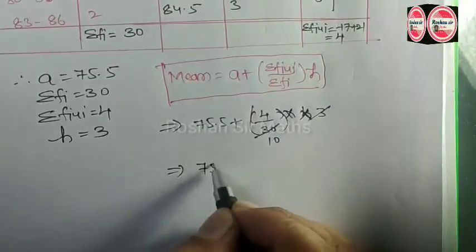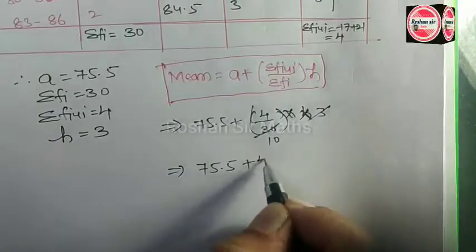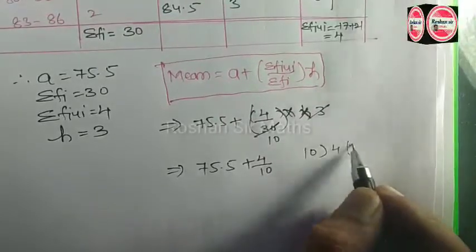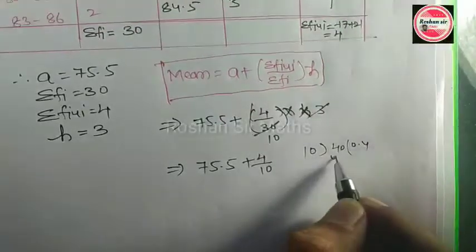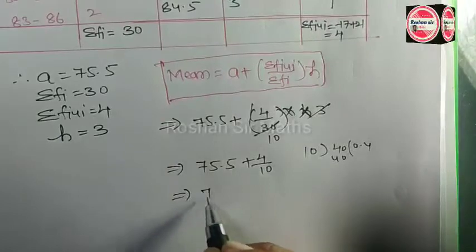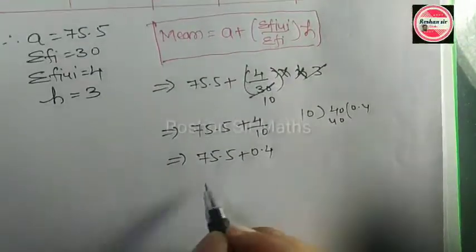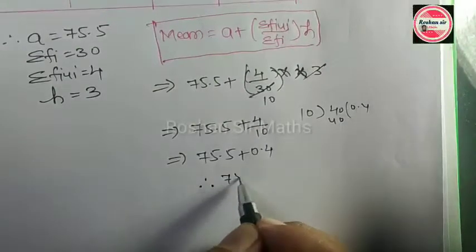H is 3, 3 times 30 is 90. 75.5 plus 4 by 10. 4 divided by 10 is 0.4. So 75.5 plus 0.4 equals 75.9.